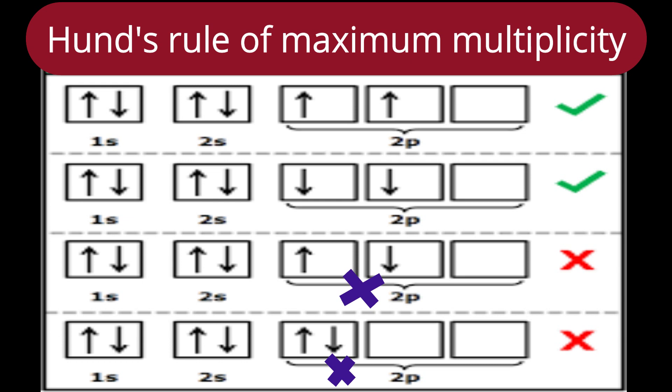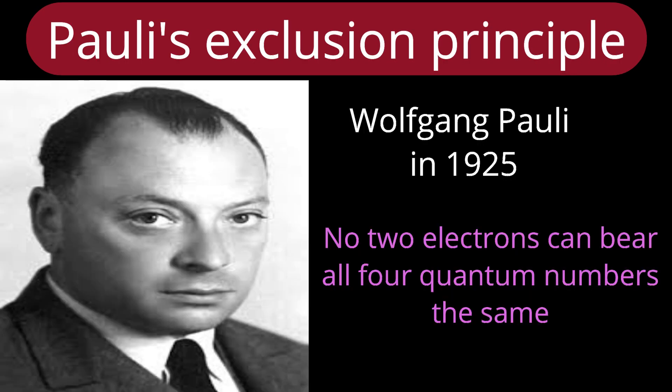Now let us see the last principle: Pauli's exclusion principle. Wolfgang Pauli, by 1925, gave his principle. Because of this principle, we say a maximum of two electrons can be in one orbital. The principle states: no two electrons in an atom will have all four quantum numbers the same.